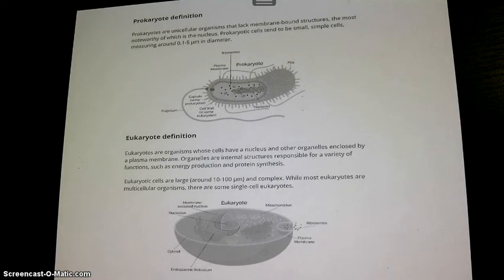Prokaryotes and eukaryotes. There are two main categories of cells. If it's living, it's made of cells. And if it's living, it's either a prokaryote or a eukaryote. Prokaryotic cells and eukaryotic cells have some things in common. They're all living. They also have some things that are different. So we're going to go through this and highlight and change a few things about prokaryotic and eukaryotic cells.